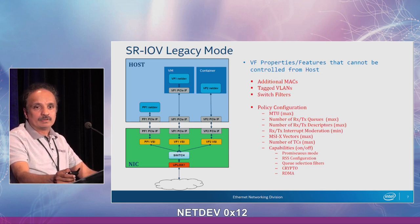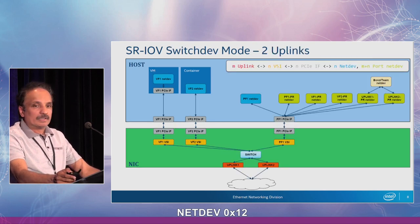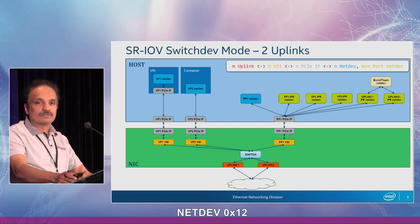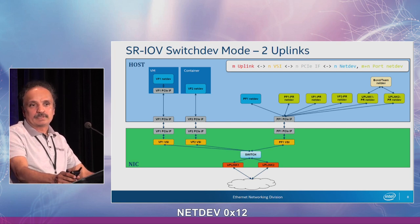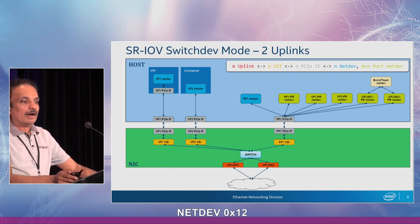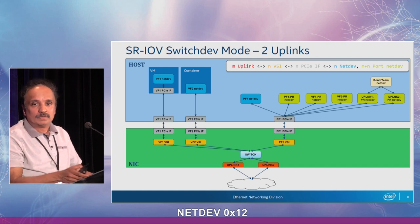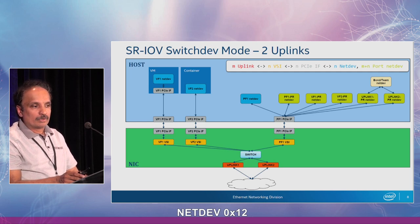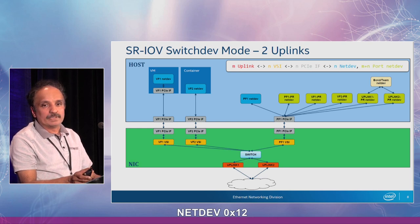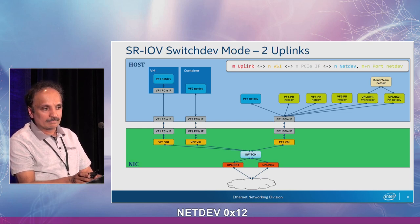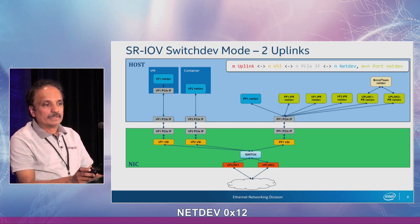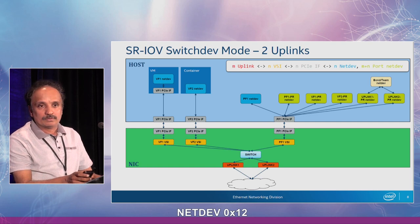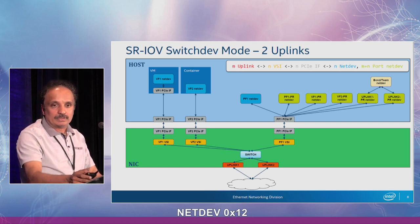This is all in the legacy mode. Now, in the last few years we have switch dev mode. What switch dev mode enables is basically it allows us to create port representers, and the port representers enable us to create additional ops on the port representer net devs. In this picture there is a port representer created per PF, VF, and uplinks. This picture shows two uplinks, and it is possible to create a bond or a team on these two uplinks to support failover or link aggregation.